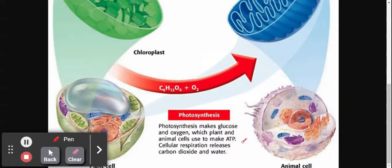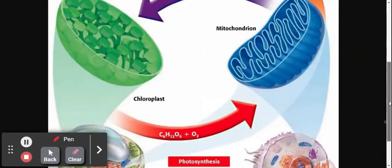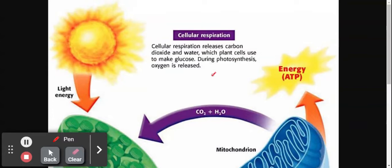We know that photosynthesis makes glucose and oxygen, which plant and animal cells use to make ATP, adenosine triphosphate. Cellular respiration releases carbon dioxide and water. Now photosynthesis takes in carbon dioxide and water.